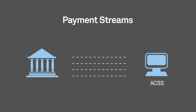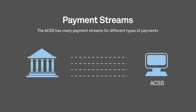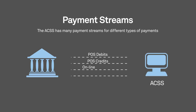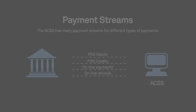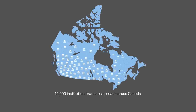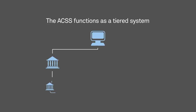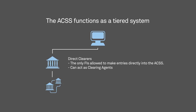To do this, FIs enter the figures into a specific payment stream. The ACSS has many different payment streams, each one representing a particular type of payment. There are dedicated payment streams in the ACSS for POS debits, POS credits, online payments, and online payment refunds. With over 15,000 financial institution branches spread across Canada, the ACSS functions as a tiered system to streamline the process. A small number of FIs function as direct clearers — which also include group clearers who make ACSS entries on behalf of credit unions — and are the only FIs allowed to make entries directly into the ACSS.